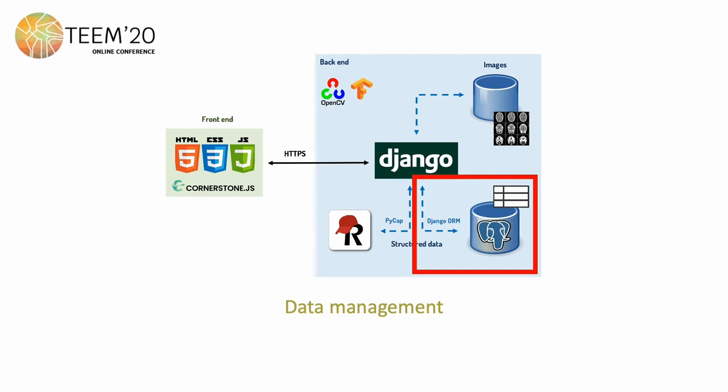Two methods are integrated and employed to tackle data management. First, the Django ORM, a database abstraction API, provides access to a relational database. The platform is mainly organized through projects, which hold data from different patients. Patient structured data is stored as a JSON object, because of the varying nature of the data schemas among projects.